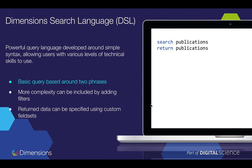What all of these APIs have in common is the Dimensions Search Language, DSL. The Dimensions Search Language is our own implementation of a query language for Dimensions data. It's a very powerful query language, developed with analysts in mind, because we wanted to make sure that people who do not have a strong programming background can still produce sophisticated queries and pull useful data from the API without having to set up a complex development environment. The queries are normally based around two phrases: a search phrase and a return phrase.